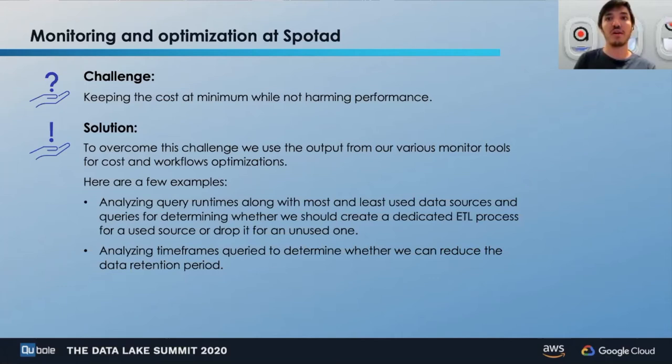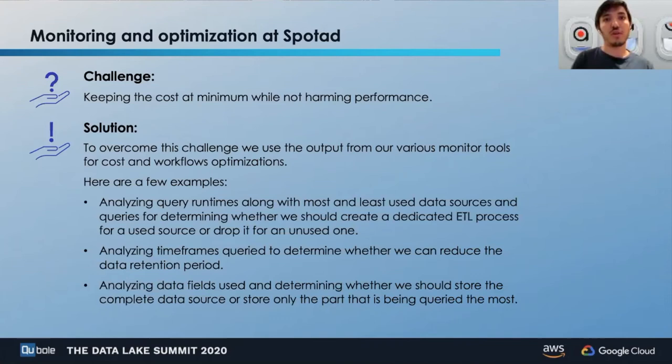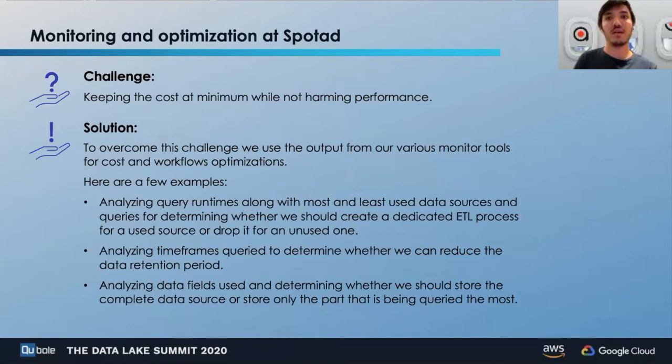The third example is something we do on a monthly basis as well: analyzing the data fields being used from a specific data source to determine whether we should store the complete data source or a subset or aggregated version of it. For example, we realized that Bitstream — one of our data sources — is being queried only for pulling out counters. This means there's no need for storing the raw data at such a granular level; instead we could store an aggregated version. By doing so, we saved terabytes of storage space and hundreds of dollars in cost.